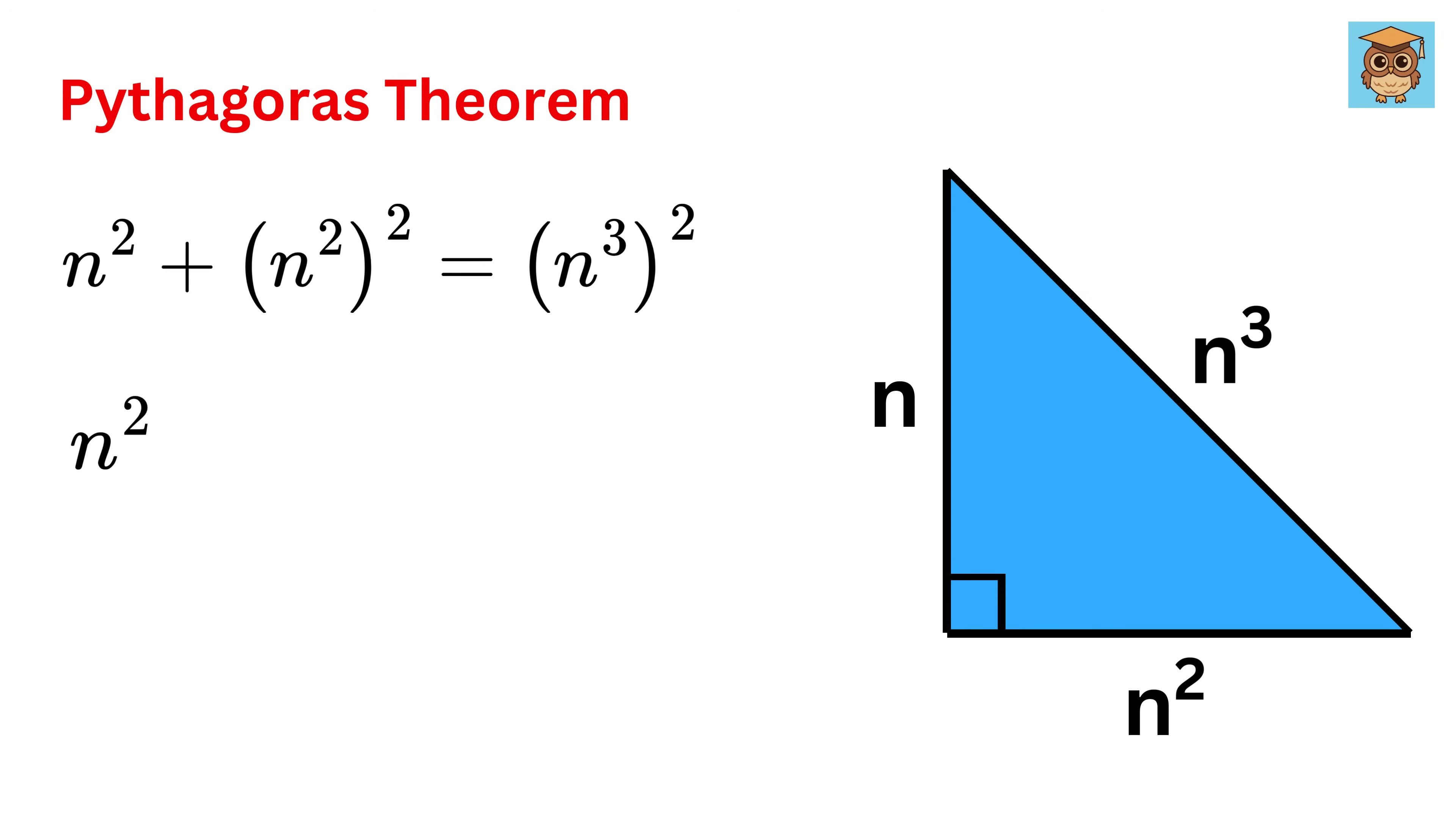This will then be n square plus n to the power 4 equals n to the power 6. Great. So now take these on the right side to get n to the power 6 minus n to the power 4 minus n square equals 0.